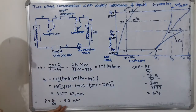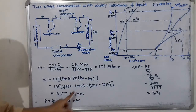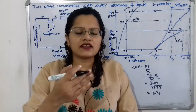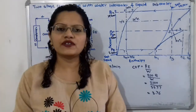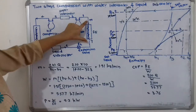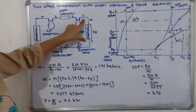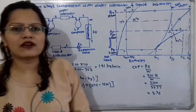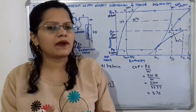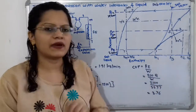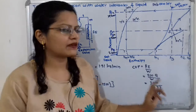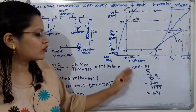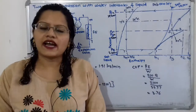The power required to drive the system is W/60 = 557.7/60 = 9.3 kW. For the coefficient of performance: COP = refrigeration effect / work done = (210 × Q) / W = (210 × 10) / 557.7 = 3.76. This is the final answer.